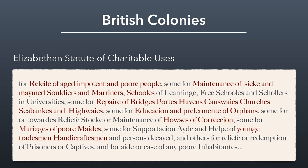Highlighting some of the interesting categories: the relief of aged, impotent, and poor people; the maintenance of sick and maimed soldiers and mariners; schools of learning including universities; the repair of public works like bridges, ports, havens, causeways, churches, seabanks, and highways; education and performance of orphans; houses of correction — meaning prisons; the marriages of poor maids; and helping young tradesmen and handicraftsmen who were apprenticing and didn't have much income. It's interesting to look at these categories and see how many have carried forward into modern-day definitions of charities and how many we've left behind — something we'll talk about together in class.